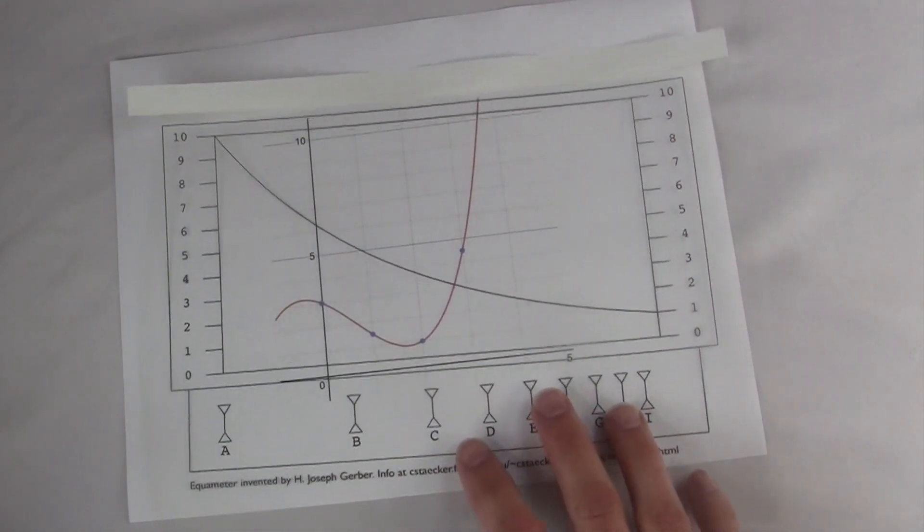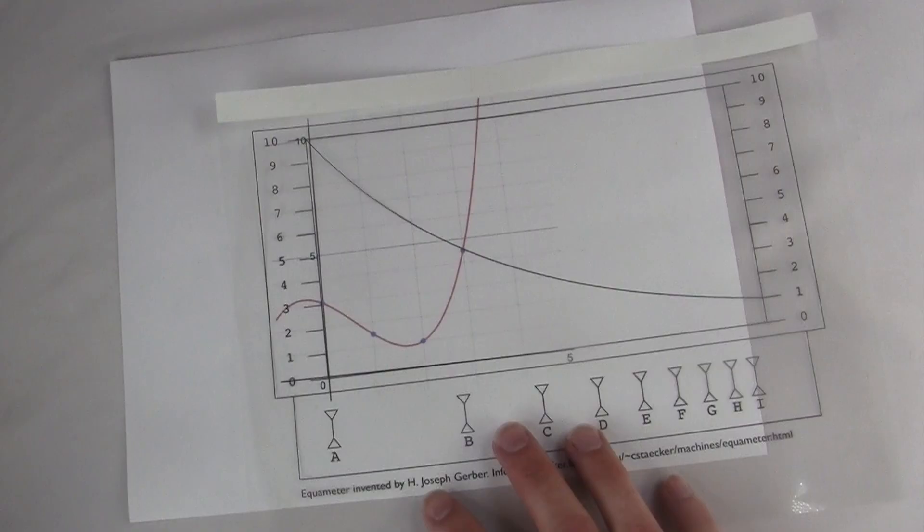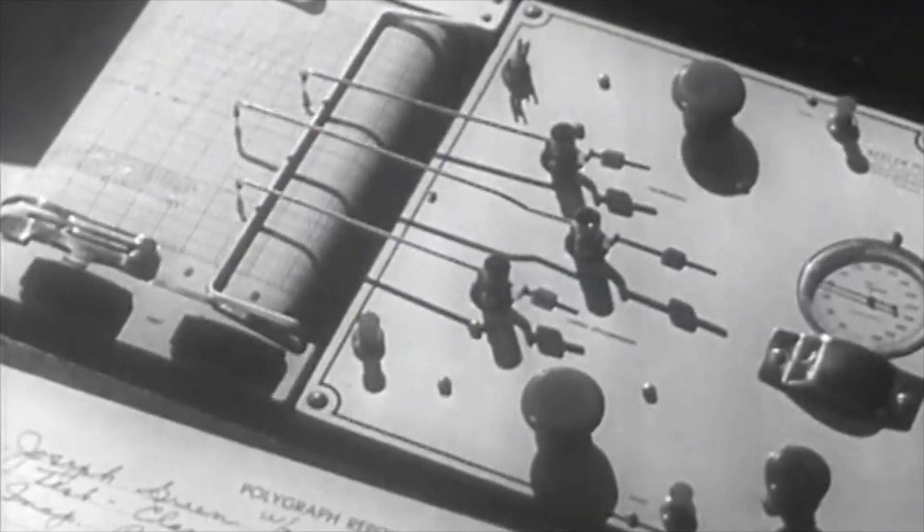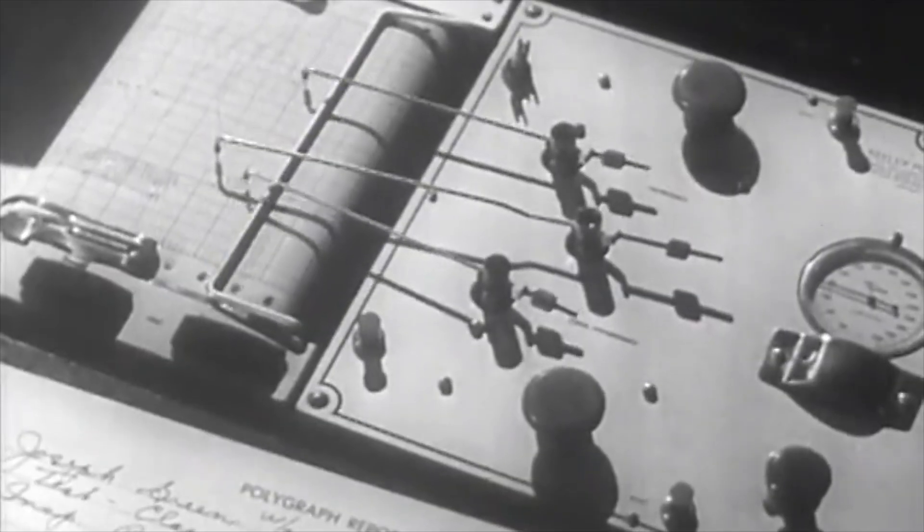This comes from an era when most of the world's data was graphical. You had machines that could measure things, but they didn't use memory to store their data. They would just immediately record the data on paper. All kinds of machines and scientific instruments would give you output that looked like this.